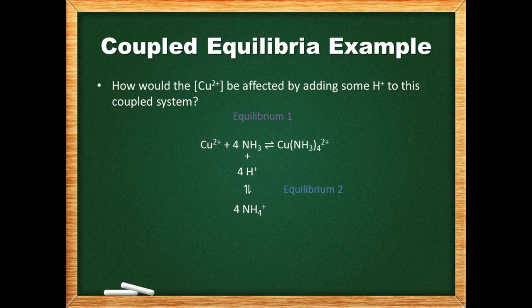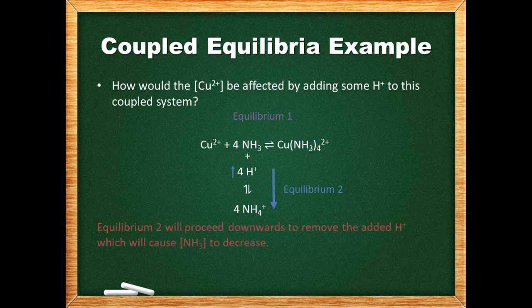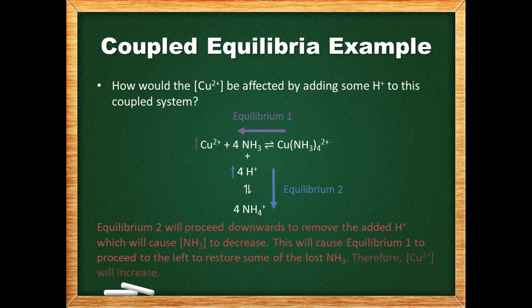Equilibria are often linked through one chemical common to both. In this example, we are asked to describe how the concentration of copper ions will be affected by adding some hydrogen ions to this coupled system. When hydrogen ions are added, equilibrium 2 will proceed downwards to remove some of them, causing the concentration of ammonia to decrease. Equilibrium 1 will respond by proceeding to the left to restore some of the lost ammonia, which would increase the concentration of copper ions.